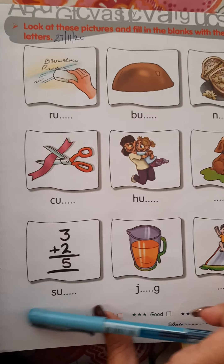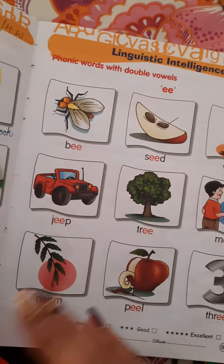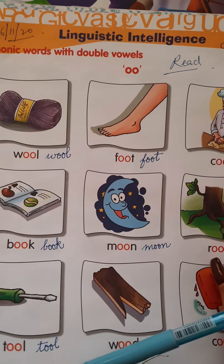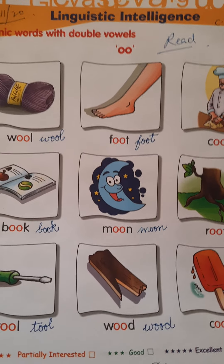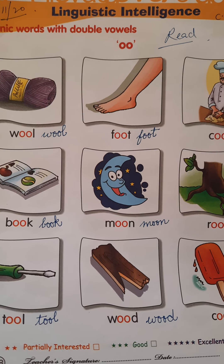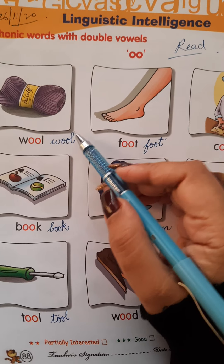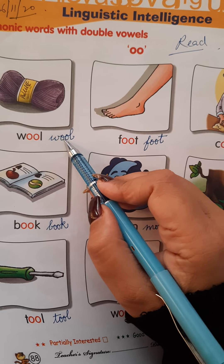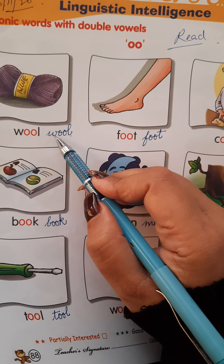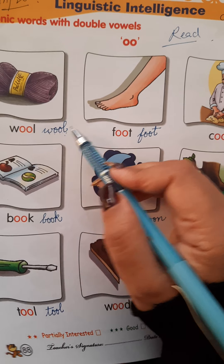Now open your page number 88, double O sound words. First we will do reading, then we will do the written work. W, double O, L — wool. W, double O, L — wool.